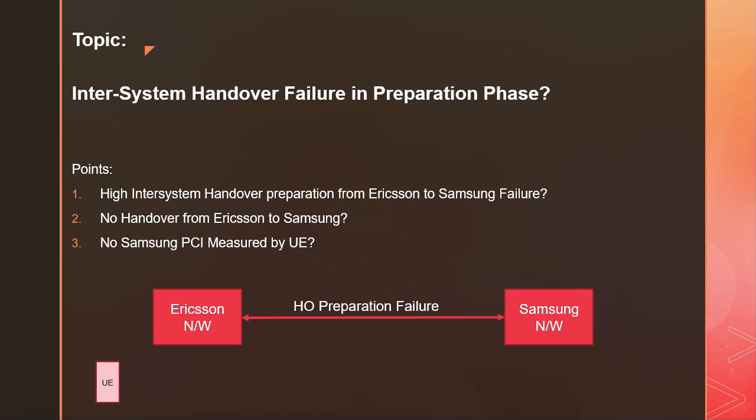Here we can see what are the problems we face in the network. Our topic is intersystem handover failure in preparation phase. What you can see is high intersystem handover preparation failure from Ericsson to Samsung — meaning no handover from Ericsson to Samsung.